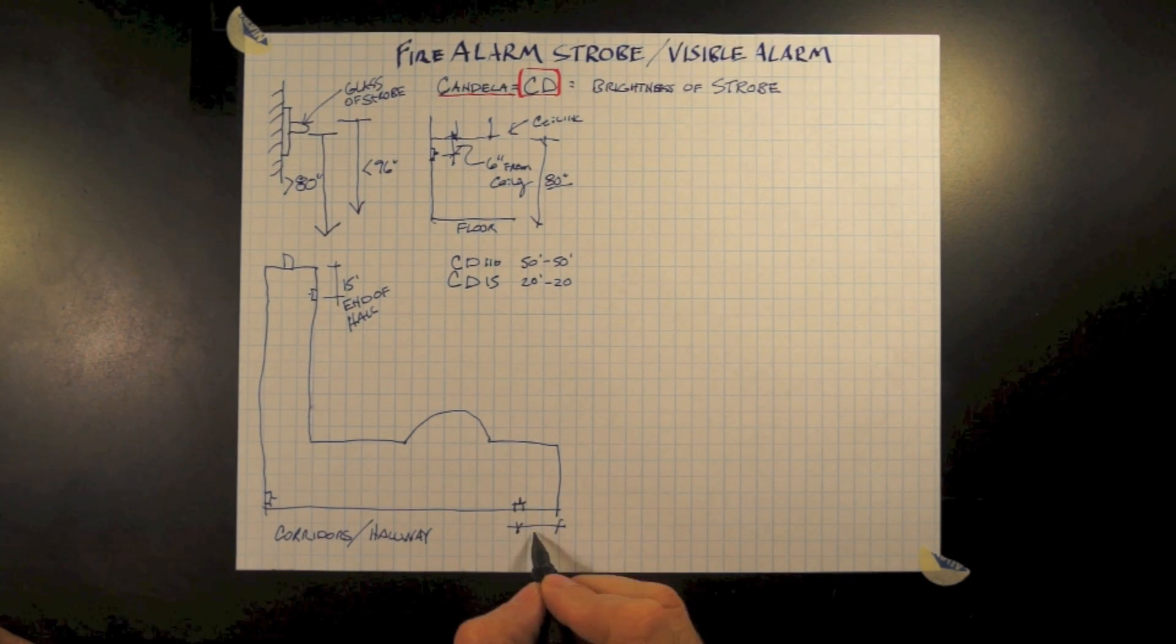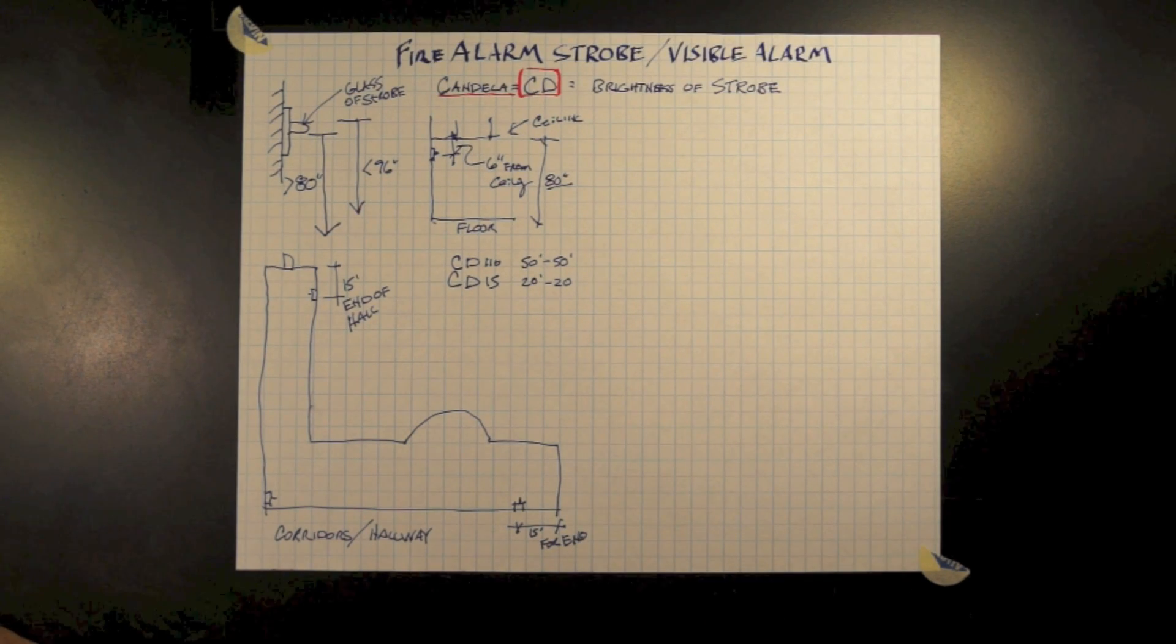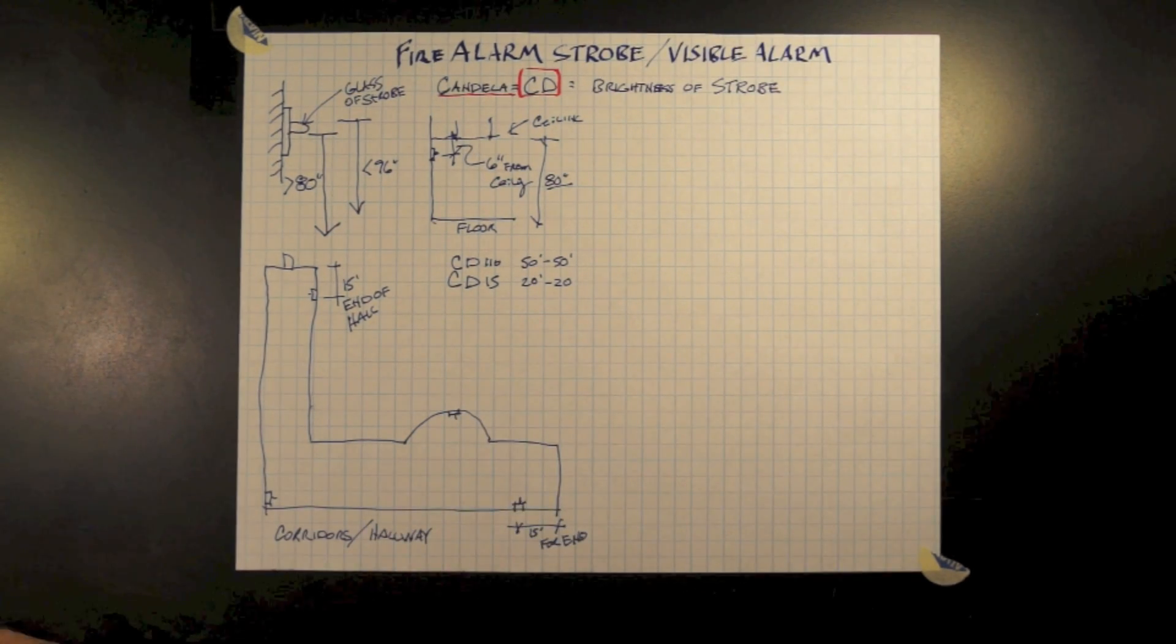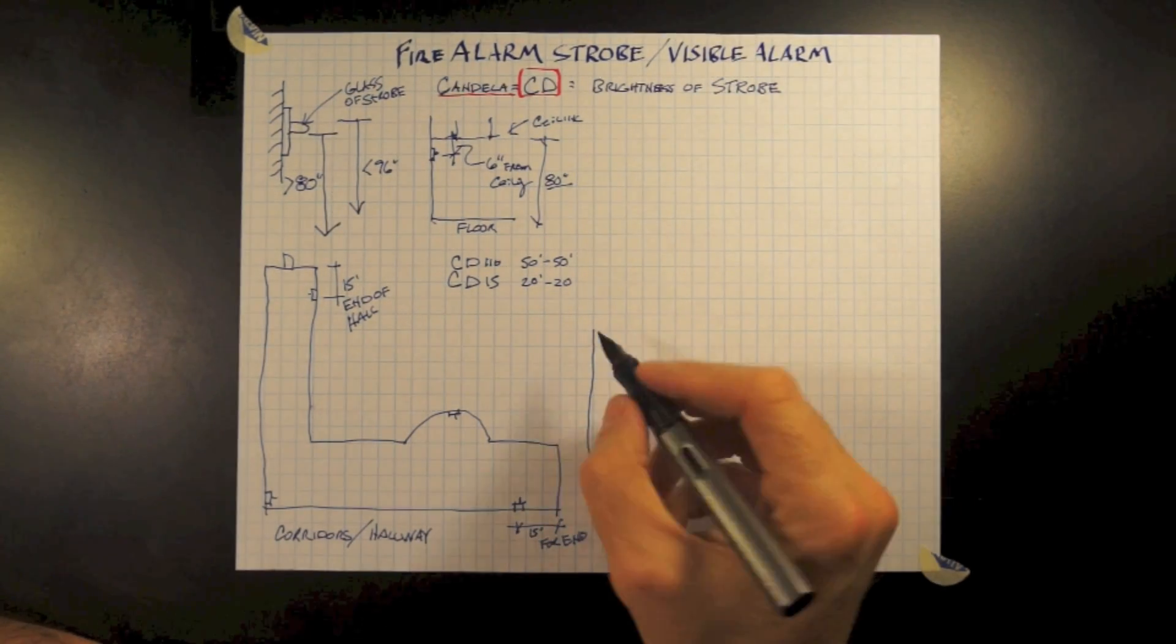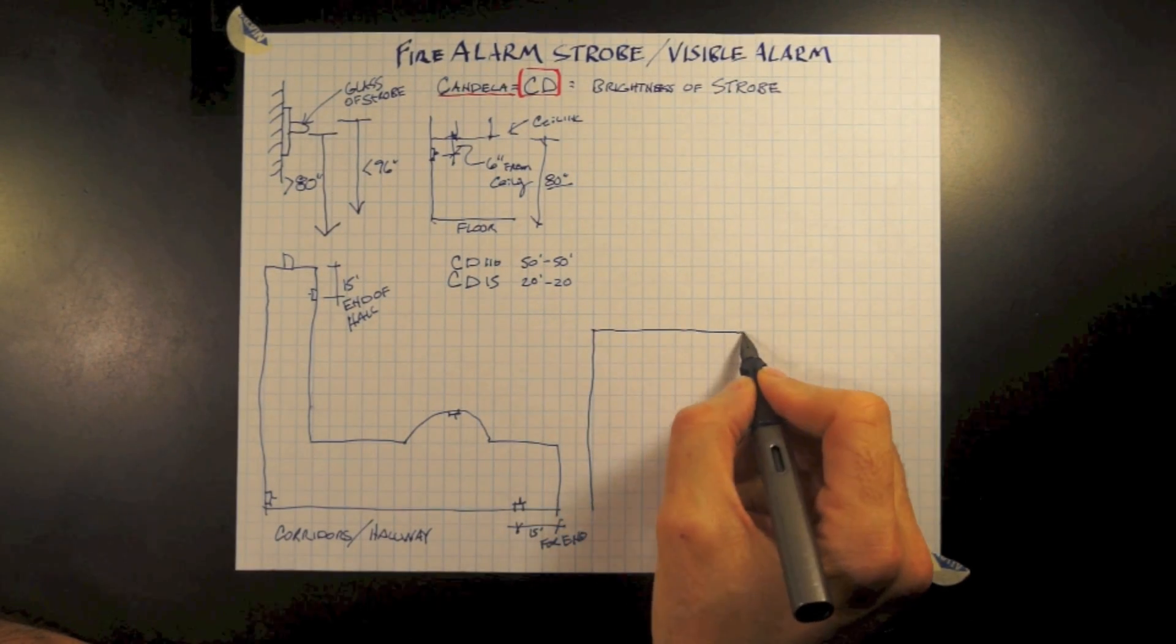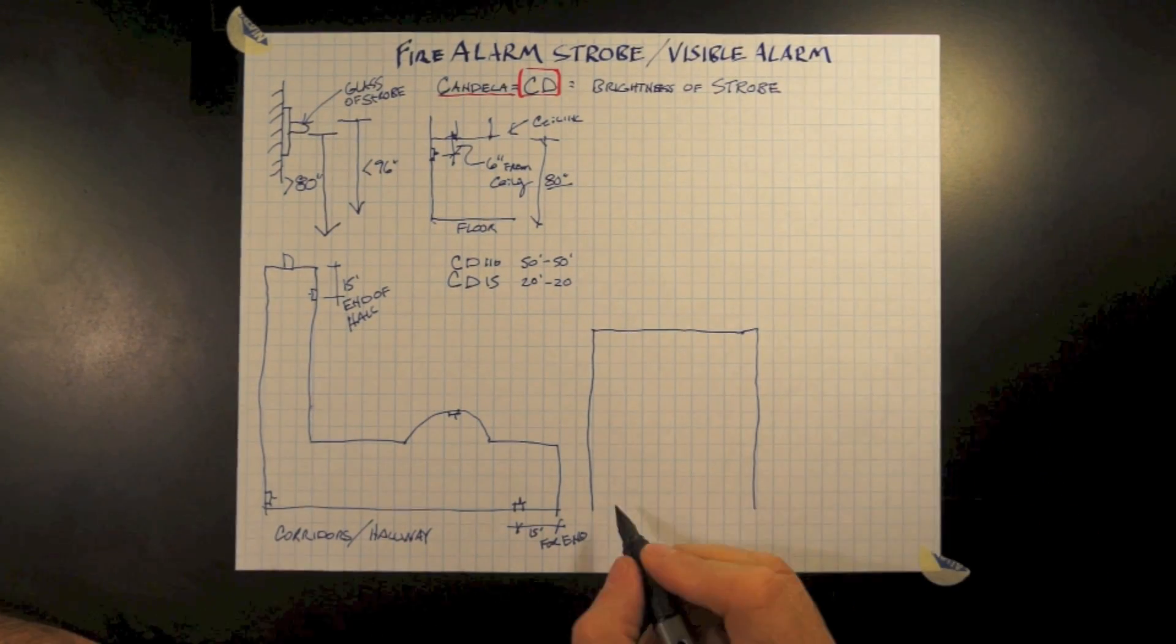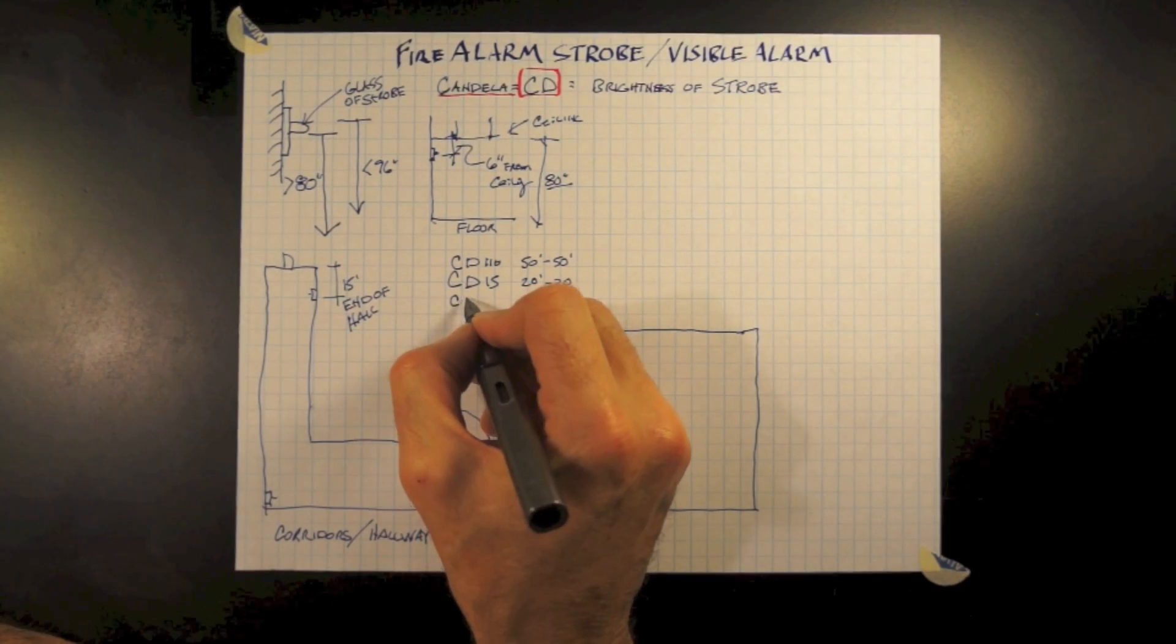Most of the code information is based on a candela of 15. But regardless of the candela, we need to look at charts in the code to understand what the different candelas may be spaced at. The code specifically states that a 15 candela can have a spread of 20 feet by 20 feet.